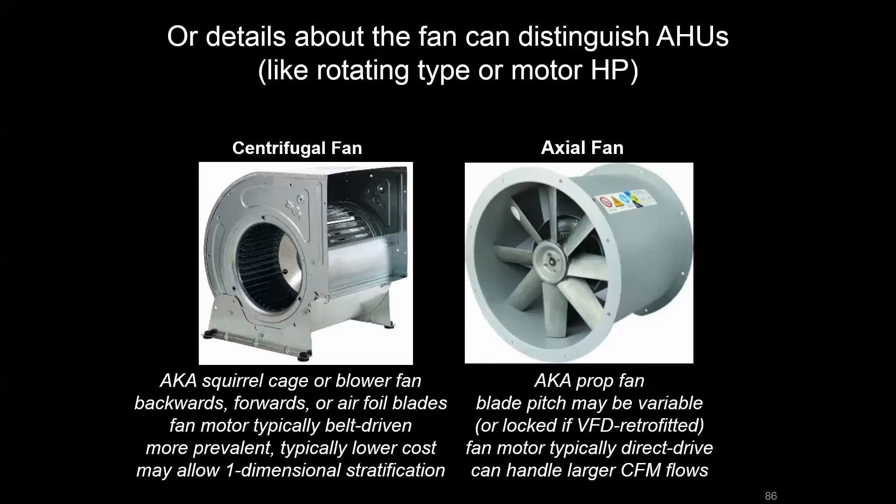We can look at the fan itself — something like the centrifugal device or more of an axial device, which is a direct drive fan or prop fan. Those have different implications for operation and ease of retrofit. With a centrifugal fan, when you put two together we may call that a double width double inlet fan, and that can have implications for how stratified air — depending on the directionality of that stratification — may exist past the discharge of that fan.